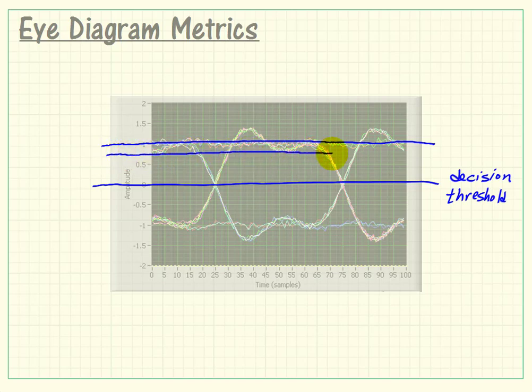If we look at this encroachment into the eye pattern, that's our definition of intersymbol interference, or ISI.